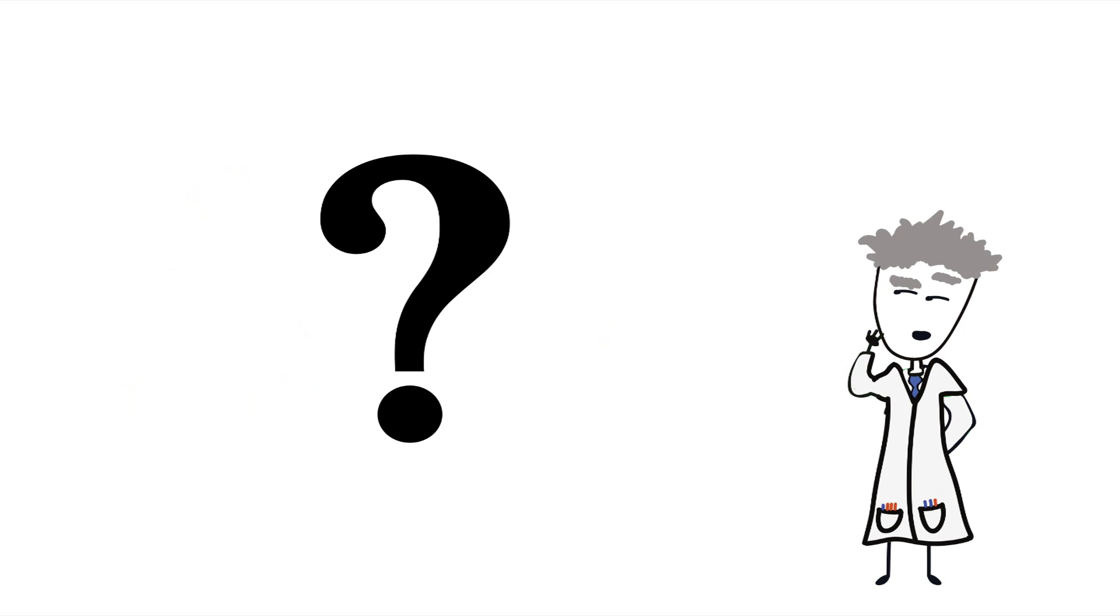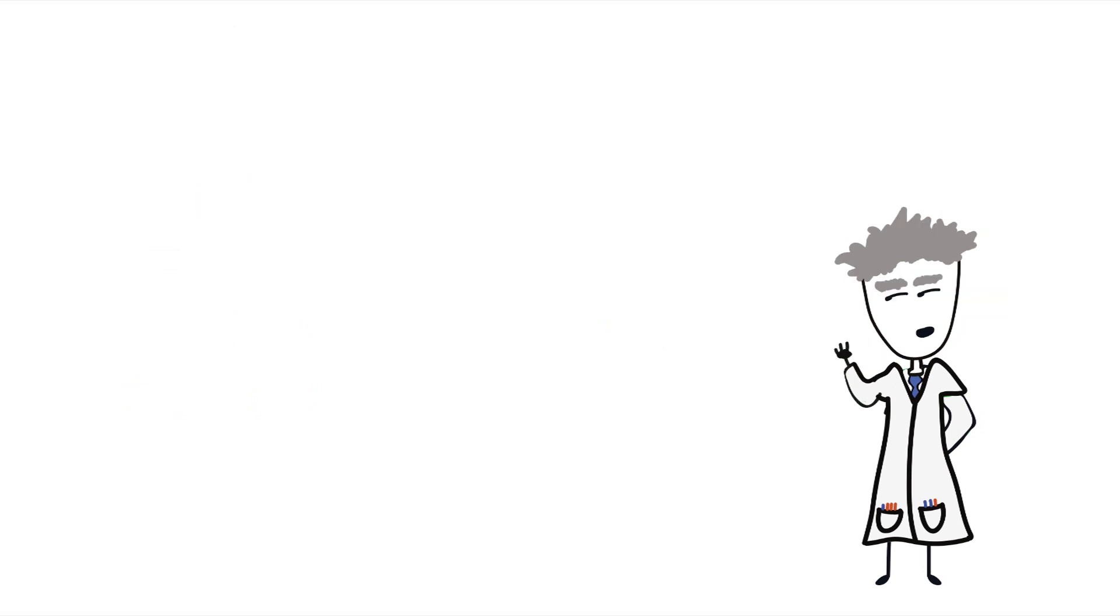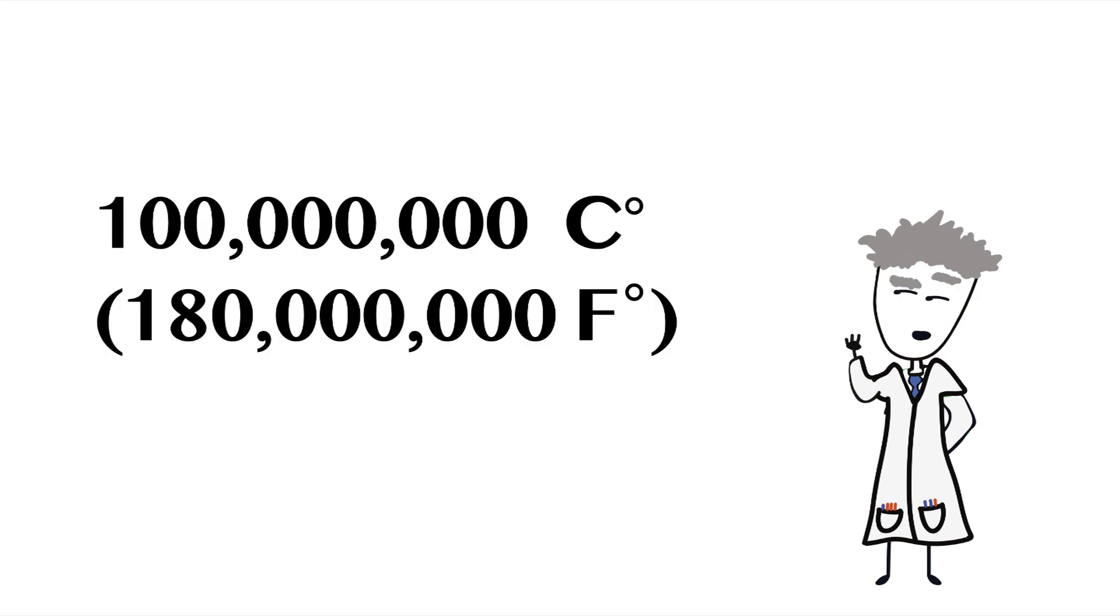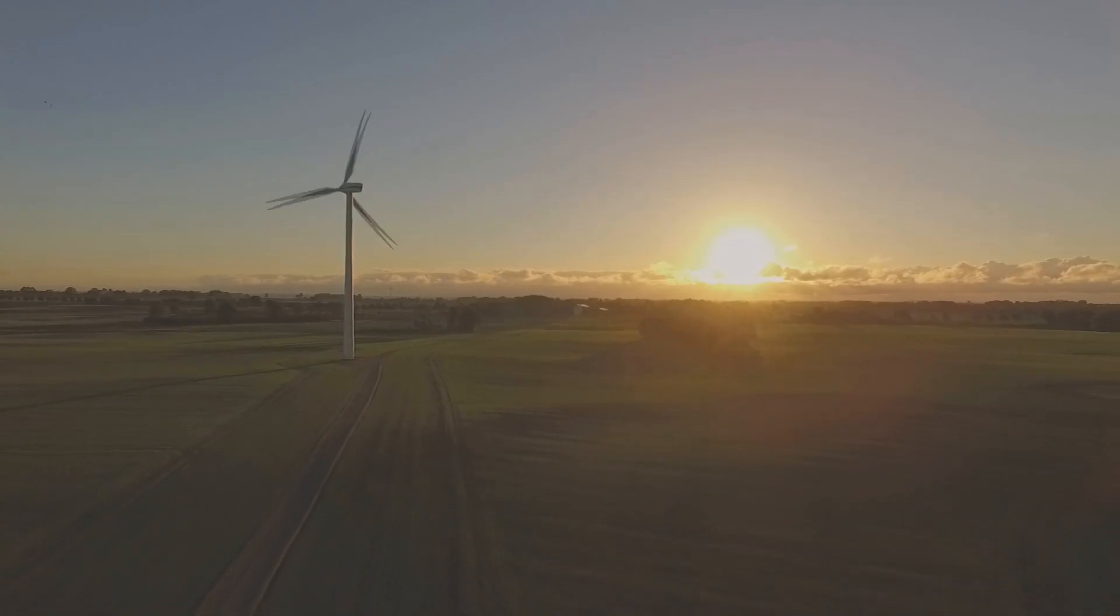But just how hot do the conditions have to be for this to happen? Just a little north of 100 million degrees Celsius. At the moment, the only place capable of maintaining this temperature is the sun's core.